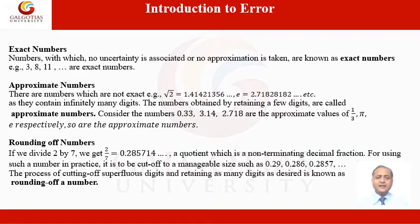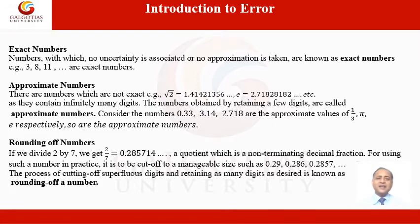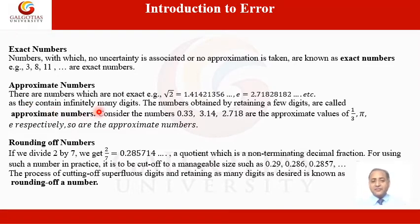Before defining an error, we must know some elementary terms on which error depends. The first one is exact numbers: numbers with which no approximation is taken, such as natural numbers 1, 2, 3. The second is approximate numbers: numbers which are not exact, such as the square root of 2 or e, as they contain infinitely many digits. Numbers obtained by retaining only a few digits are called approximate numbers.